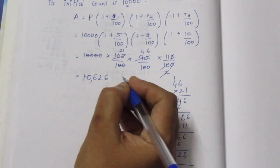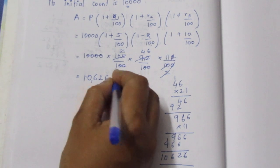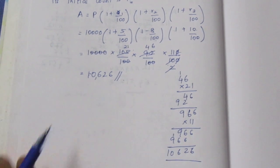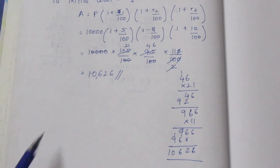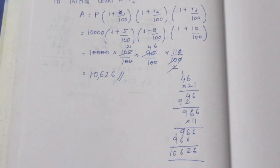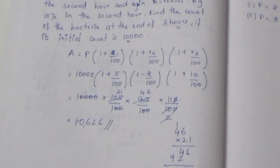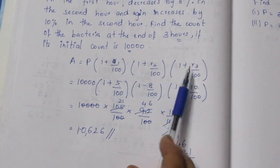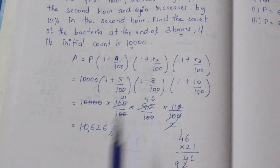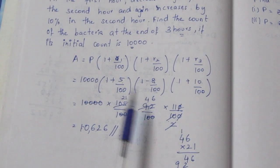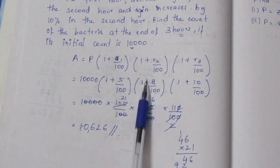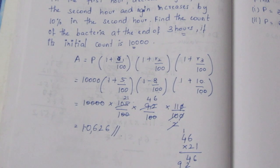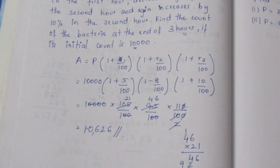So the bacteria count increases from 10,000 to 10,626 after 3 hours. We used this formula to calculate growth at different rates — including increase, decrease, and depreciation values. That's the solution. Thank you.